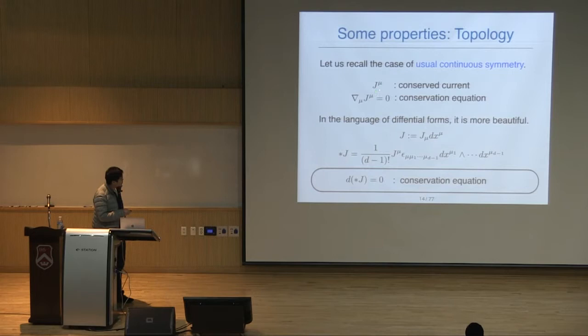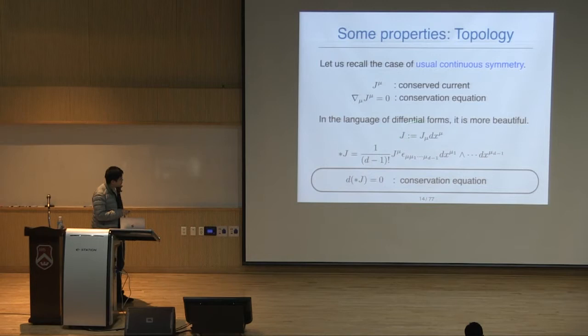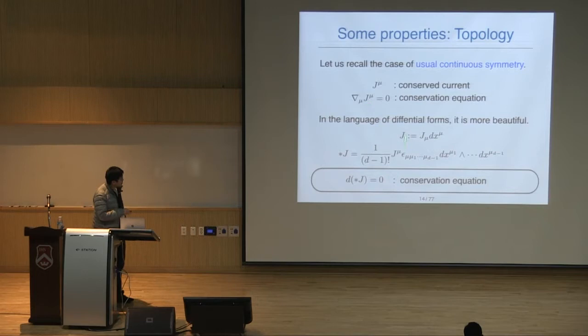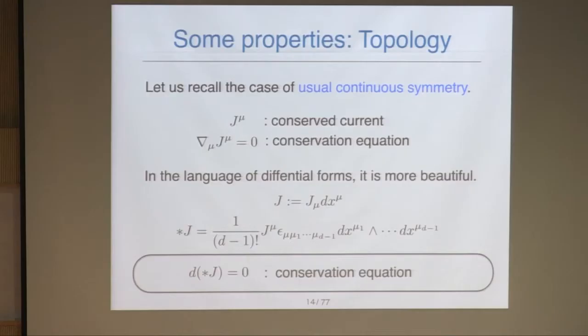In the language of differential forms, we can rewrite this conservation equation more beautifully. We define the one-form J = J_μ dx^μ. Then we take the Hodge dual of this current — this is a (D−1)-form. The conservation equation corresponds to: the exterior derivative of the Hodge dual of the current is zero. So the conservation equation simply says that this Hodge dual is closed.